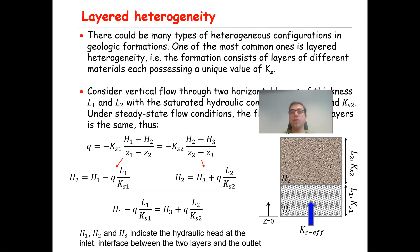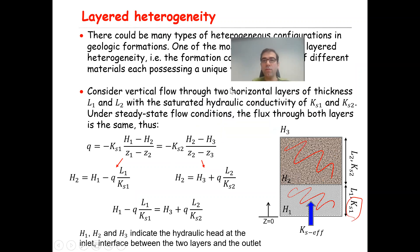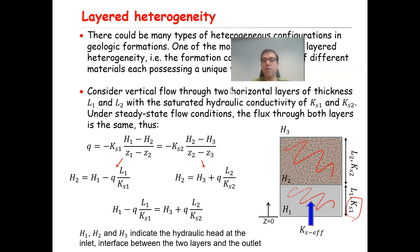That is, the formation consists of layers of different materials, each possessing a unique value of Ks. Here you see an example of a two-layered system: layer one and layer two, where each layer has its own Ks1, Ks2, L1, and L2. The question is how to calculate the effective permeability or effective hydraulic conductivity of such a layered system. In this lecture, we will consider two scenarios.